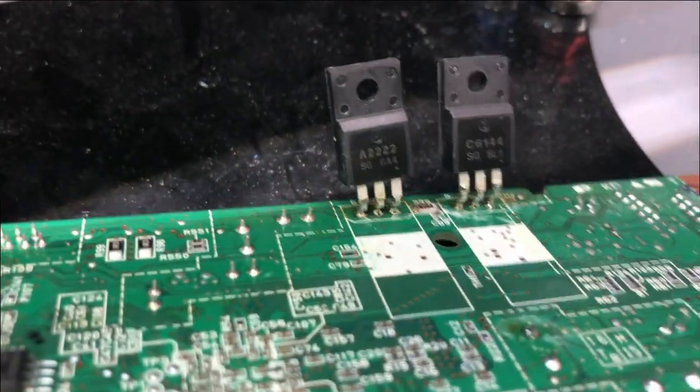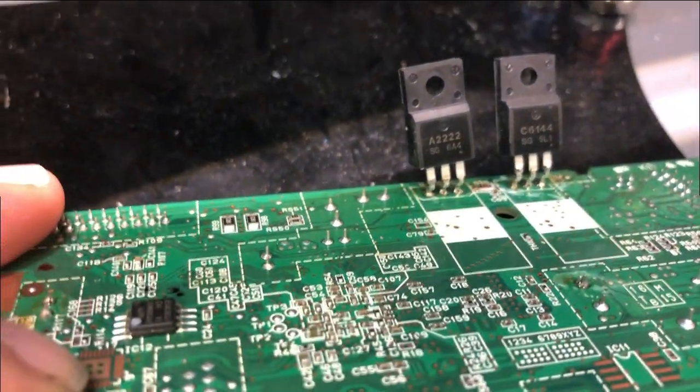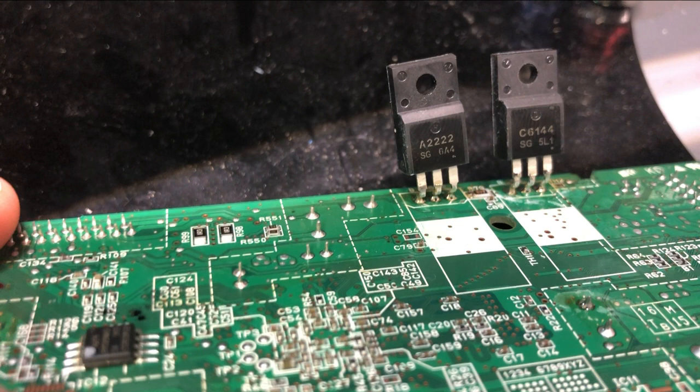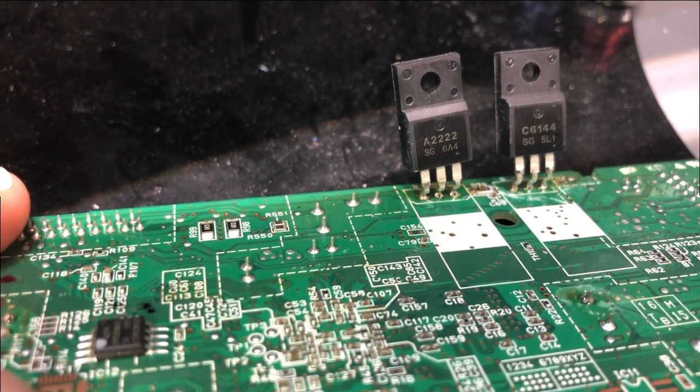You're going to see one of the transistors is A2222. Today I'm going to show you how to test this transistor on board without taking it off. The other one will be C-something. It's the opposite of doing this. If you understand how to test A2222, you understand how to test the other one.